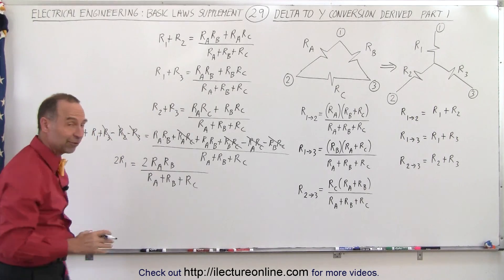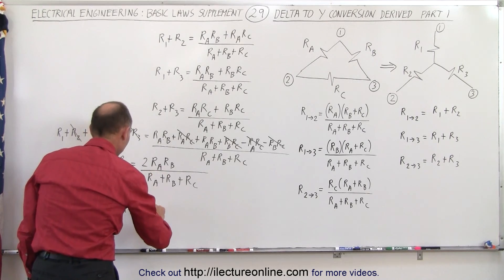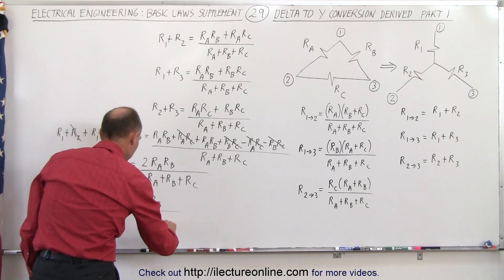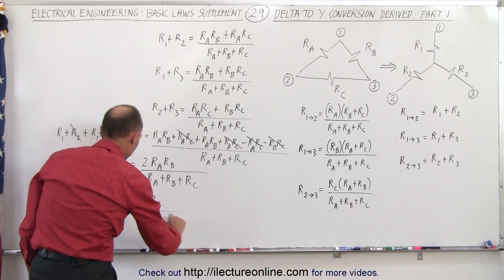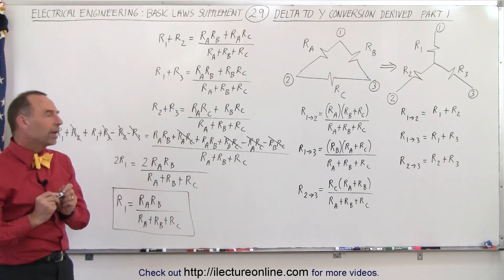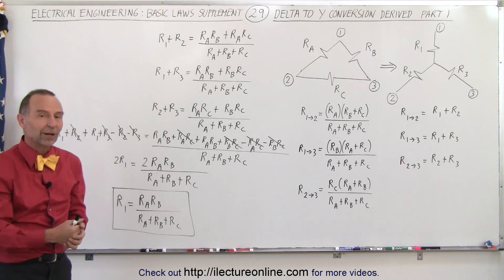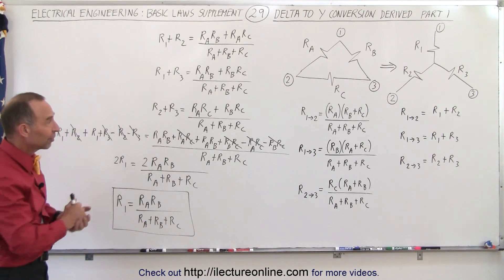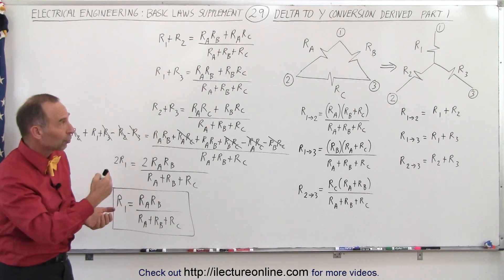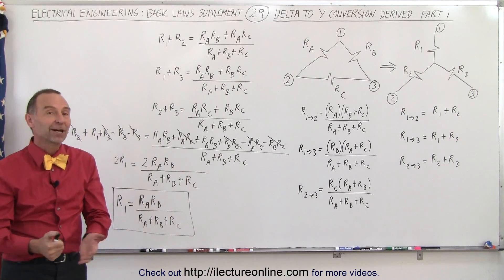Dividing both sides by 2, we get R1 = (RA · RB) / (RA + RB + RC). That's how you find resistor R1. Because we're out of board space, we'll do a second video to show how to find R2 and R3 — the trick will be the same, just recombined differently. That's the approach we take to derive the equations for the delta-to-Y conversion, and that's how it's done.